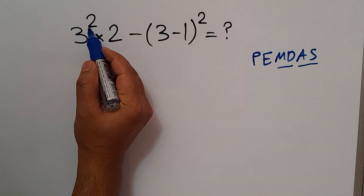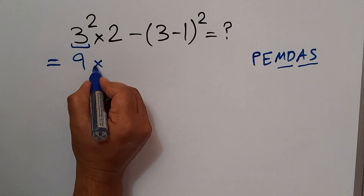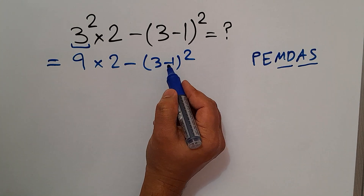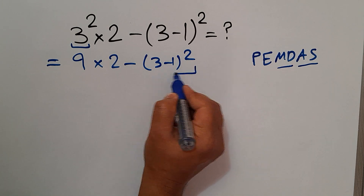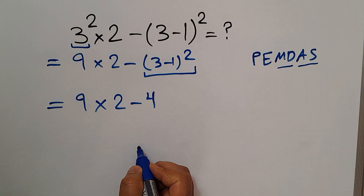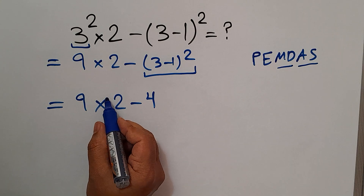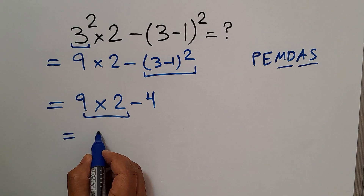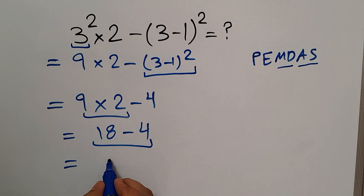First, this exponent: 3 squared gives us 9, so we have 9 times 2 minus 3 minus 1 squared. Next, 3 minus 1 gives us 2, and 2 squared equals 4, so we have 9 times 2 minus 4. Now multiplication has higher priority than subtraction, so first 9 times 2 equals 18, giving us 18 minus 4. Finally, our answer is 14.